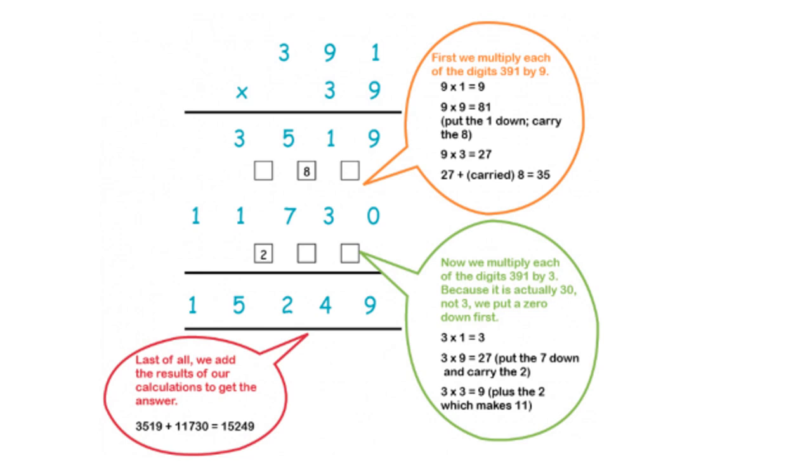Now you add in columns. 0 plus 9 is 9, 1 plus 3 is 4, 5 plus 7 is 12, carry 1. 3 plus the carry 1 is 4, plus 1 is 5, and 1 is on its own. Please make sure that you can do this by practicing.